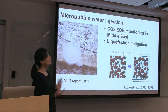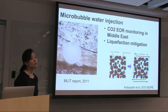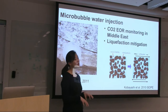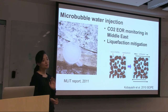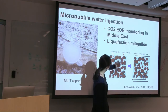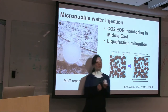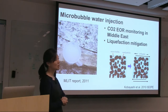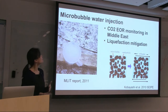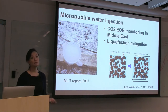The idea for liquefaction mitigation is injection of microbubble water into the shallow surface. During an earthquake, the microbubbles can shrink, move, or change shape to minimize ground motion effects in situ. So the microbubble water injection we're doing was proposed for EOR monitoring, but it will also potentially be used for liquefaction mitigation monitoring.